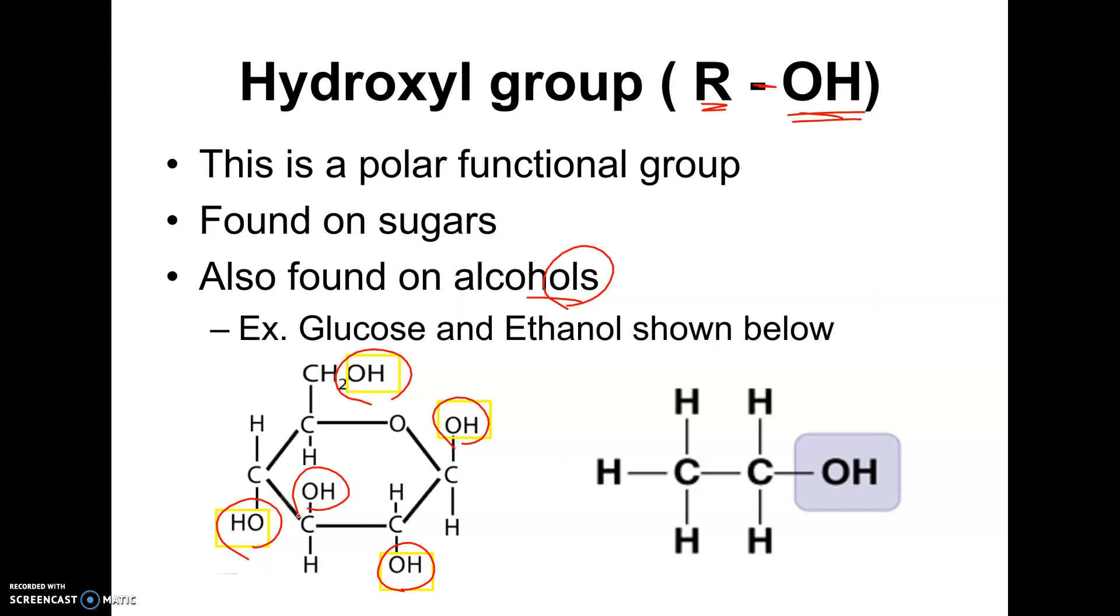Now, ethanol does not dissolve in water very well, even though it does have this. So this is polar, but remember that this is non-polar. So this is why in the lab, ethanol dissolved the iodine. Iodine was non-polar, and it dissolved well in ethanol. Even though ethanol does have this little polar portion, overall, ethanol tends to be a non-polar molecule.